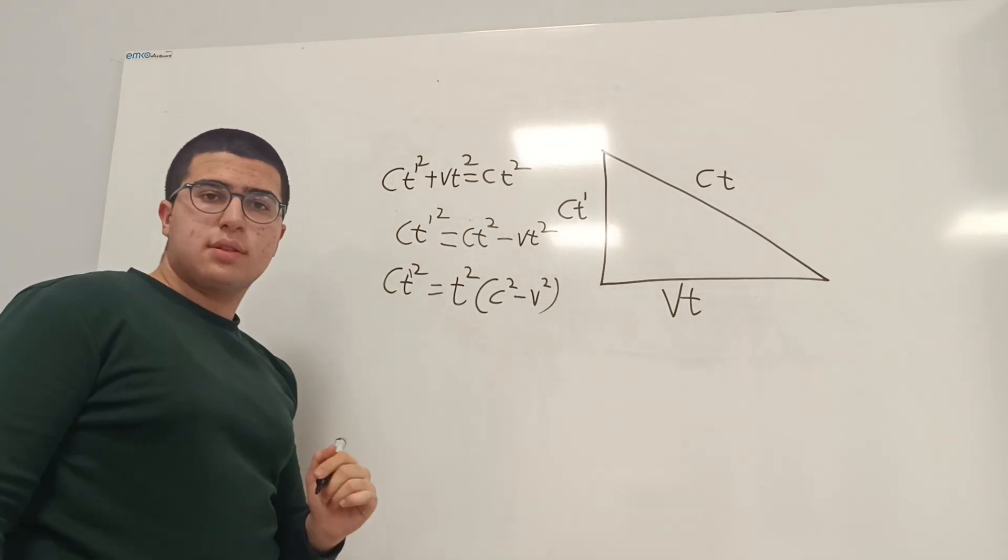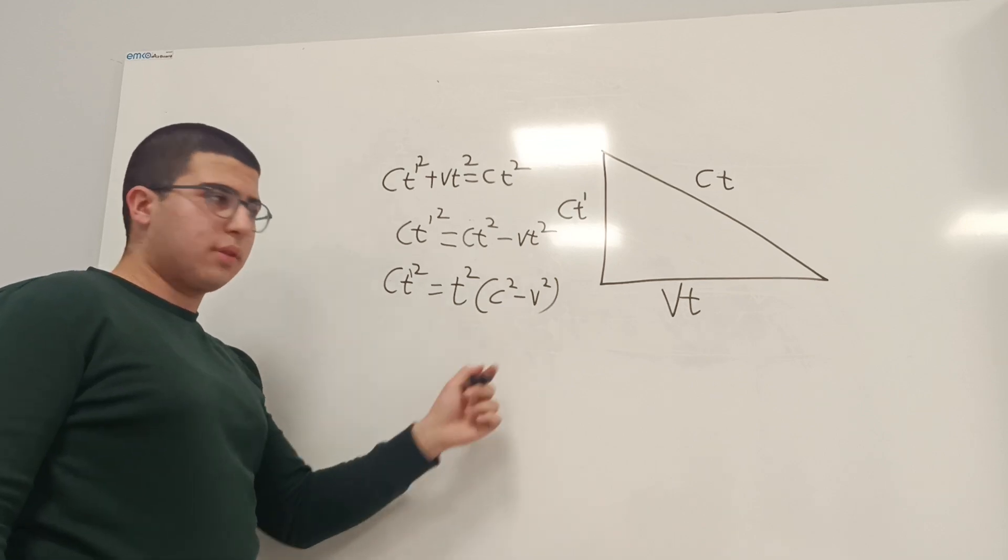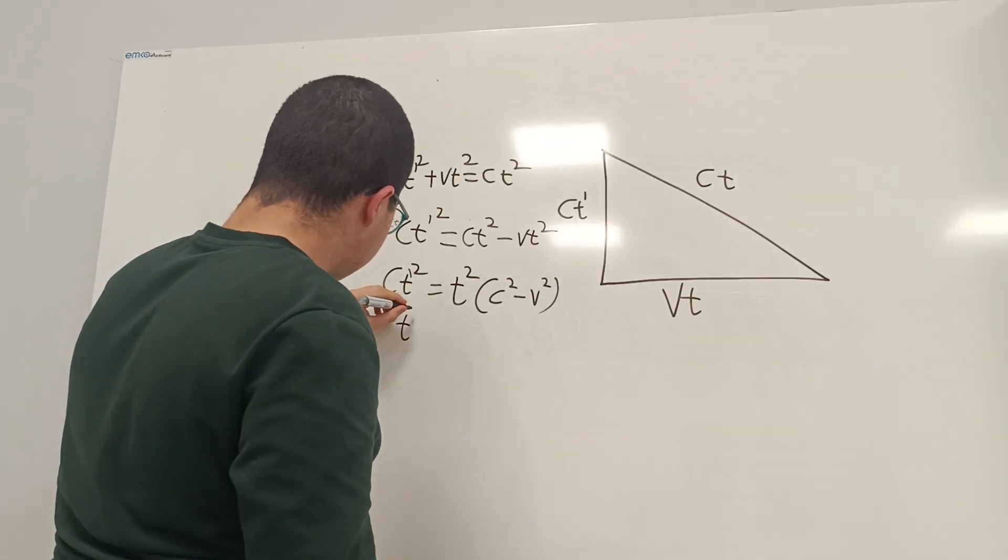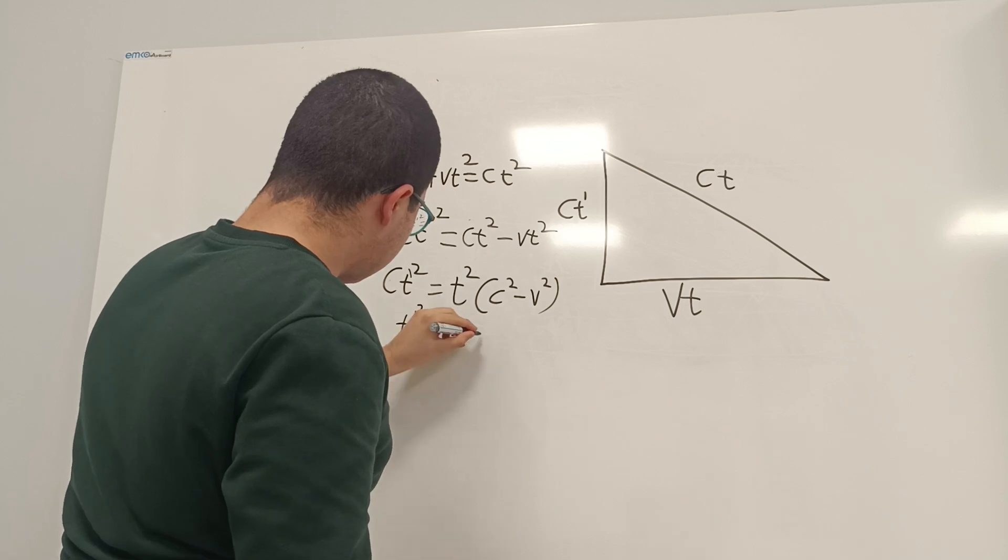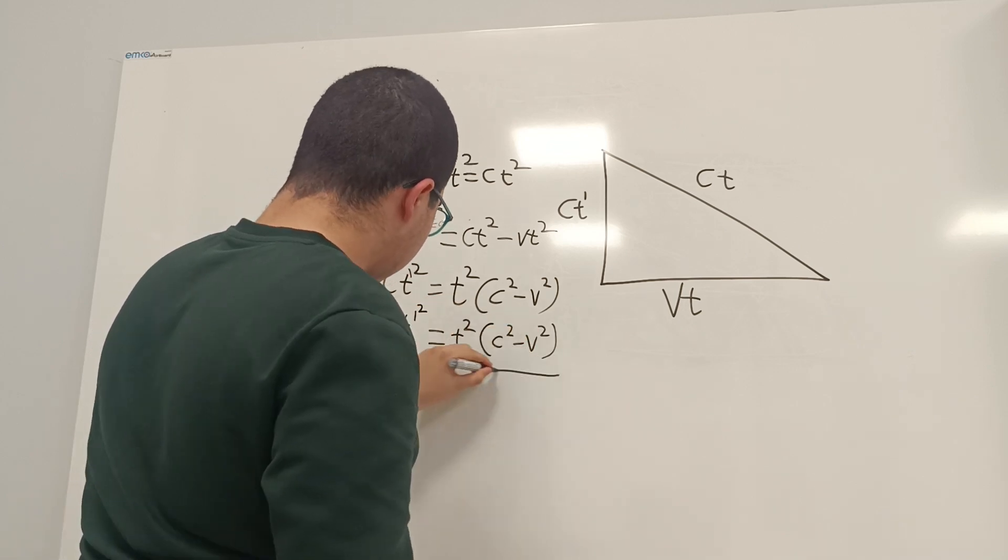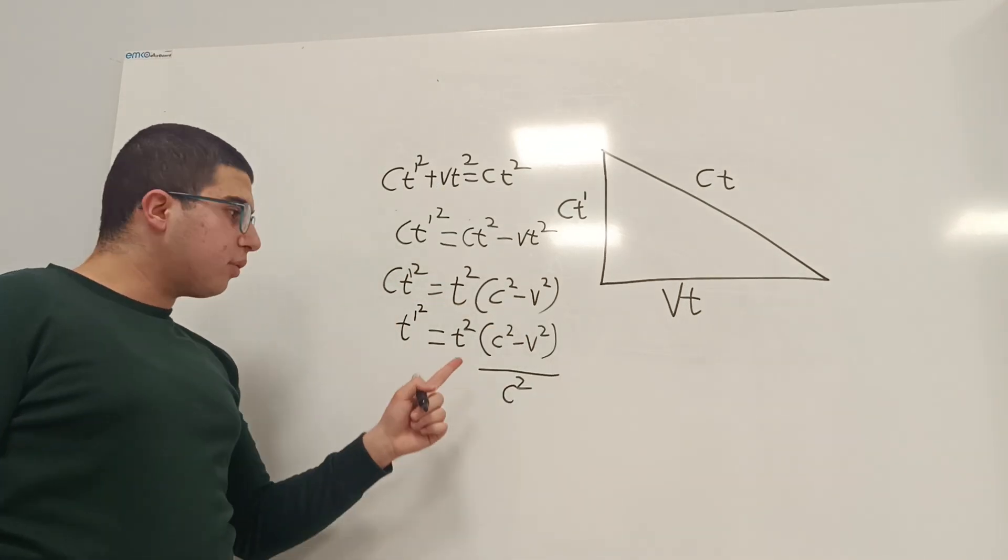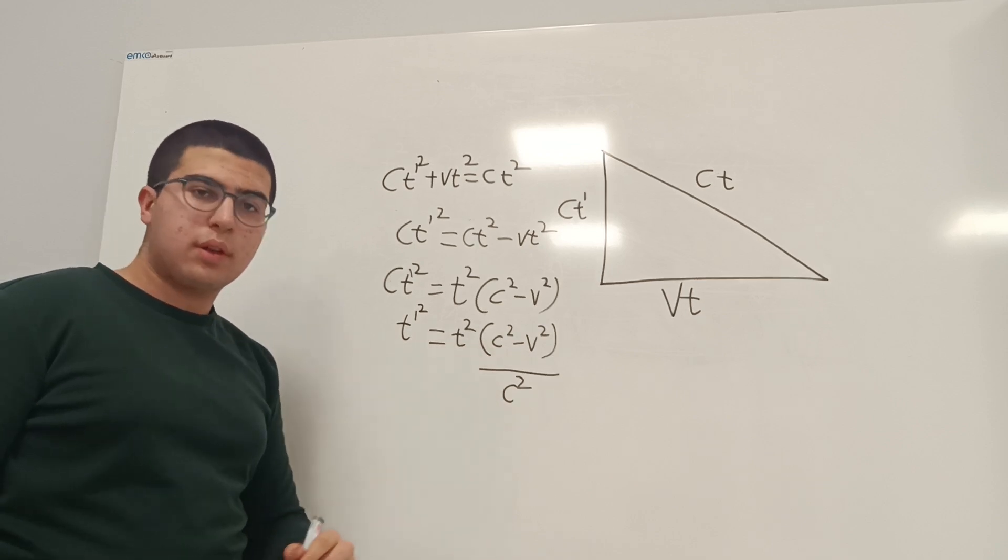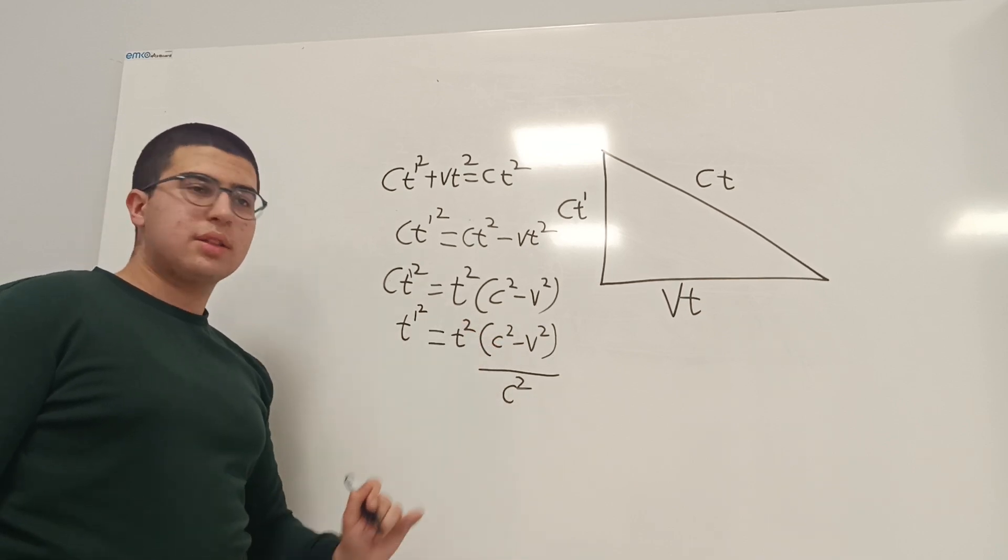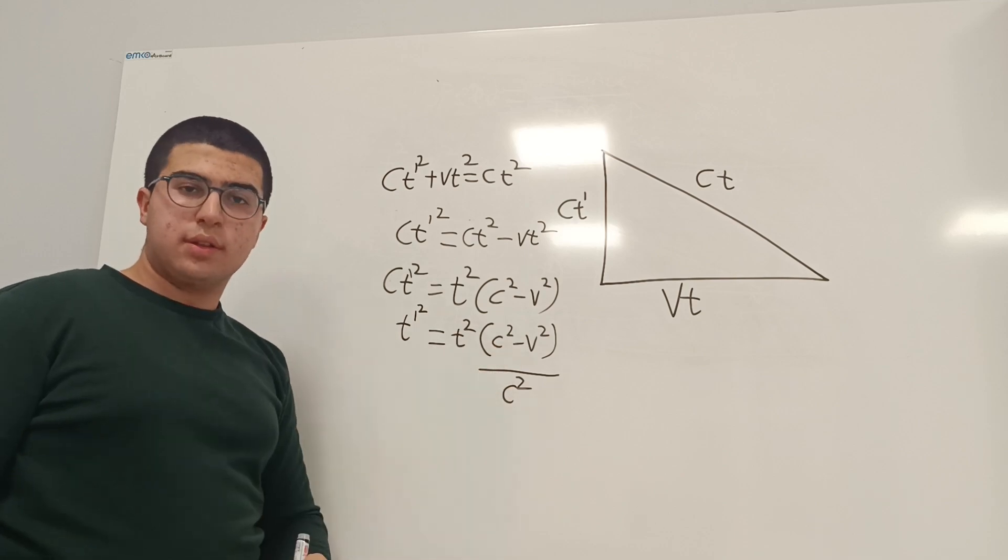And then send this c squared on this side to the other side. And now, c squared and c squared here will cancel out, and will leave us with 1 minus v squared over c squared.